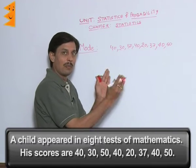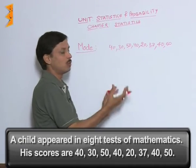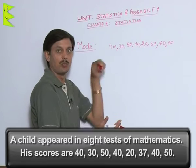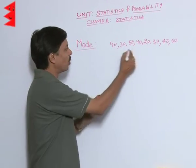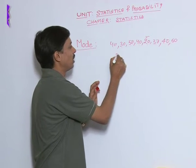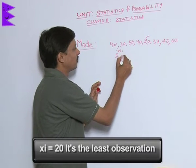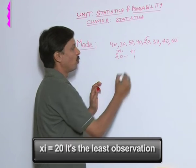We will make the frequency table or we will see which number, which observation, which data is repeating maximum number of times. In one go, if I see which is the least observation, 20. It is XI, its frequency is what? 1. Frequency of 20 is 1.